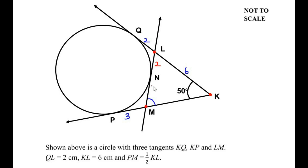The total length of LM is going to be 2 plus 3, which is 5 centimeters. Now let us find the length of KM. The length of KQ equals the length of KP because K is the external point. KQ is 2 plus 6 which equals 8, so KP is also 8. Since MP is 3, the length of KM is 8 minus 3 which is 5 centimeters. So both KP and KQ are 8 centimeters.